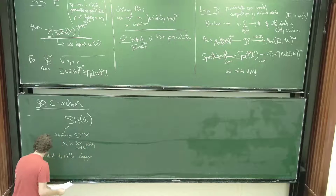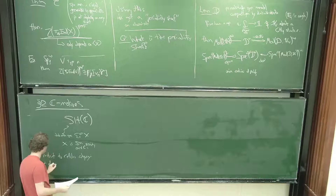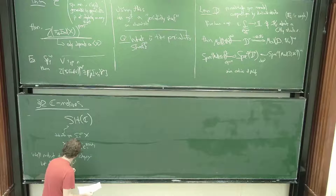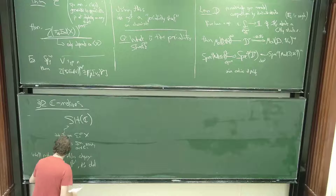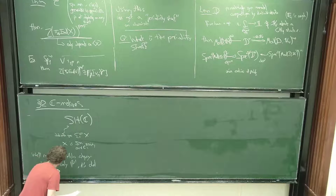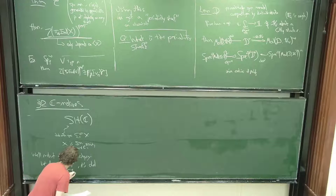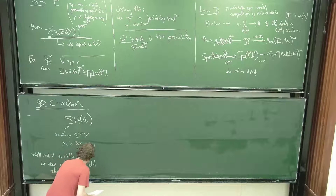Restricting to the cellular category means we allow only P¹, its dual, colimits, desuspension, and tensor products. This gets it down to the varieties I actually do know about.